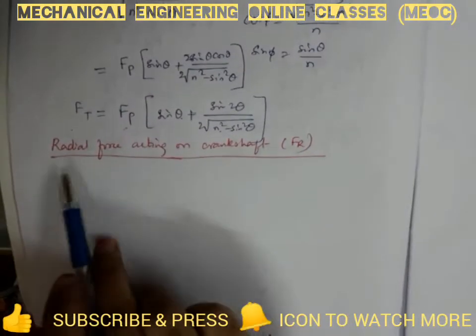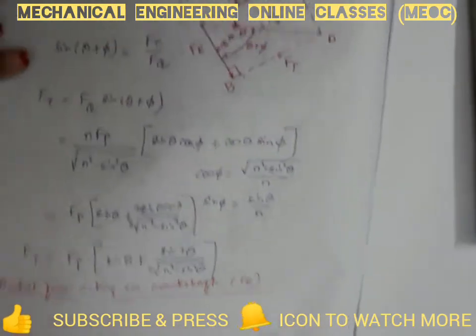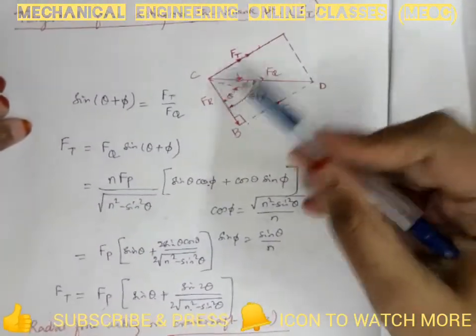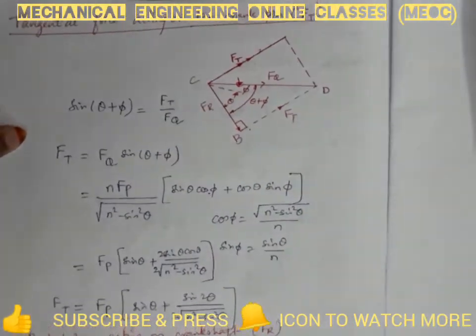So similarly we can find the radial force acting on the crankshaft which is nothing but Fr. We have previously found just Ft and from the same figure we can find Fr.